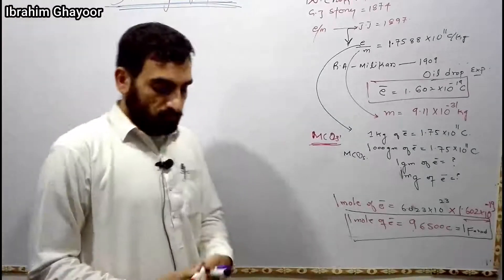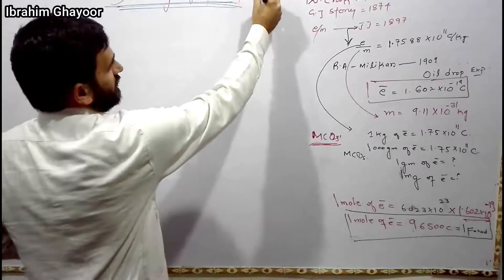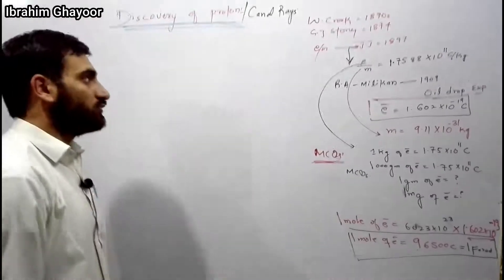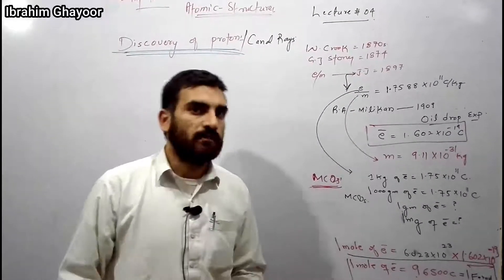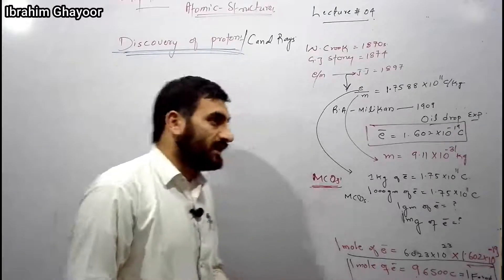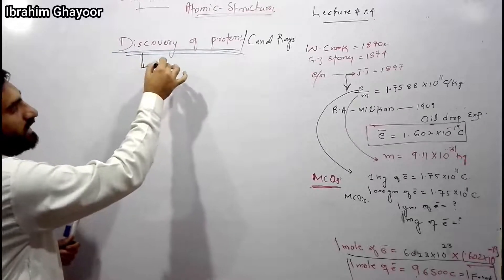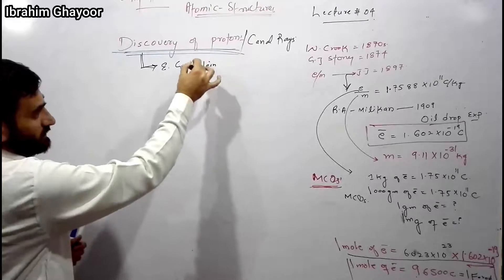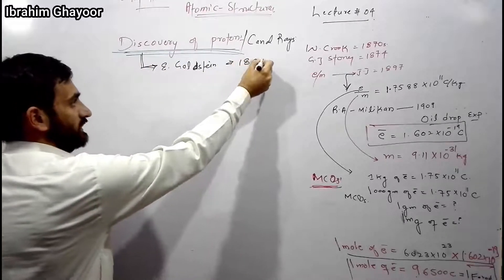Now, the discovery of the proton. The proton discovery is linked to canal rays discovery. Every canal ray particle is not necessarily a proton — canal rays are not a fundamental particle, whereas cathode rays are a fundamental particle. The proton was discovered by Goldstein through his canal ray experiments.